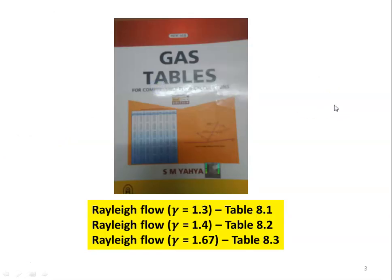This is the gas table we have to refer for properties in the Rayleigh flow. There are three tables: 8.1, 8.2, and 8.3 for three different types of fluid with gamma equal to 1.3, gamma equal to 1.4, and gamma equal to 1.67. Gamma equal to 1.4 is for air; for the other two fluids, the gamma value will be given in the problem.